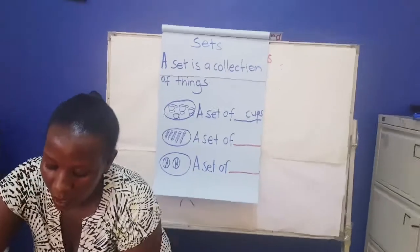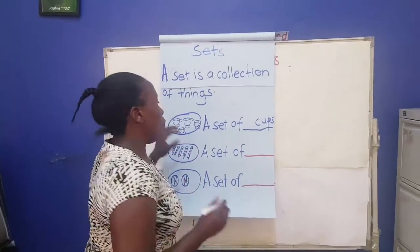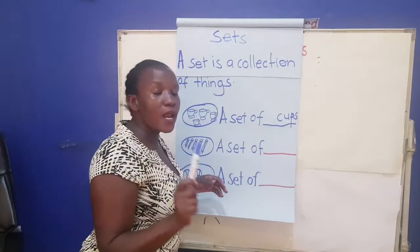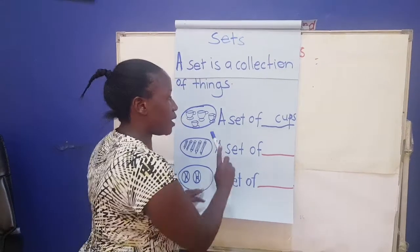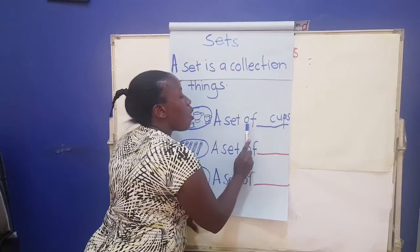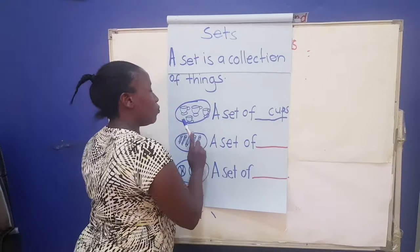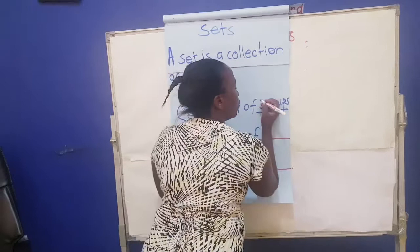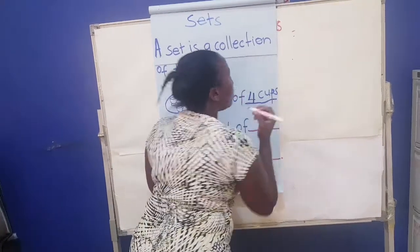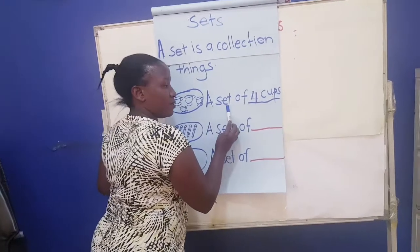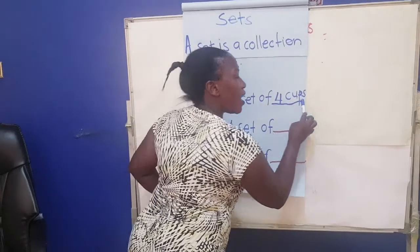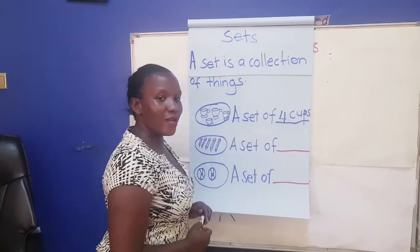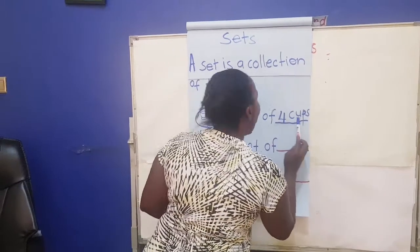Let's read together. After this top class we are going to P1 and no one is going to read for you, so you better learn how to read. We counted four cups, so we write: a set of four cups. Let's read again — a set of four cups.